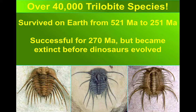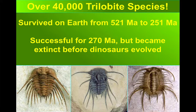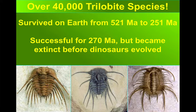As other animals evolved, the advantages that trilobites had were diluted. They were as a result in a long-term decline before the final groups became extinct at the end of the Permian period, but in their time they were tremendously successful.